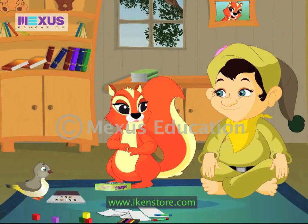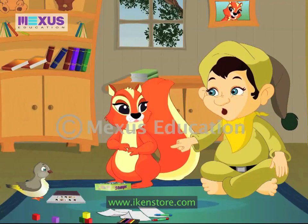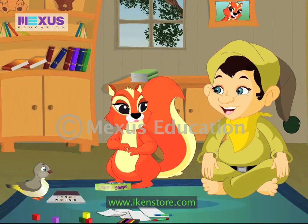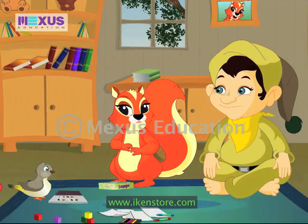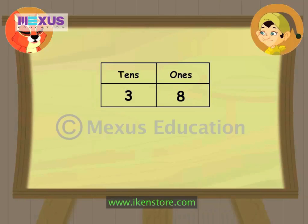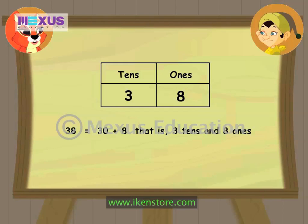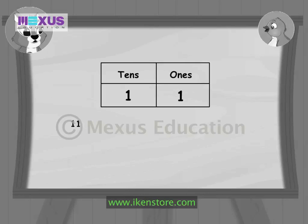Let's play a quiz. I will give you a number and you express it as tens and ones. Done! 38! Hmm, the first digit is 3, so it would be 30 and 8. That is 3 tens and 8 ones. Brilliant! Chappie, you do number 11. First digit is 1, so it would be 10 and 1. That is 1 ten and 1 one. Great! Well done, both of you!